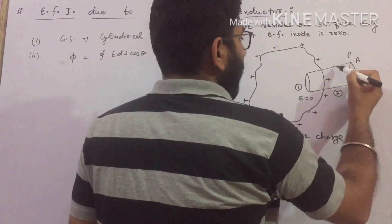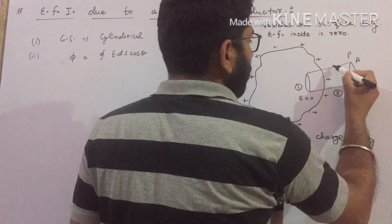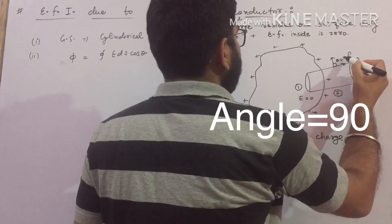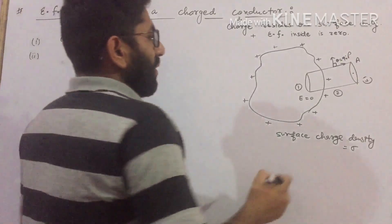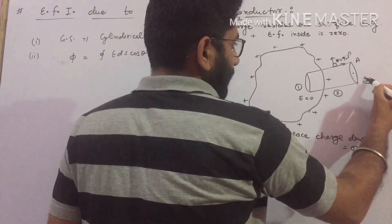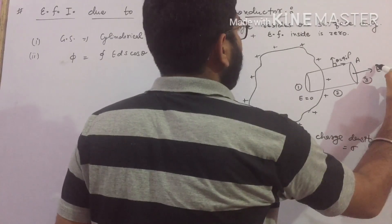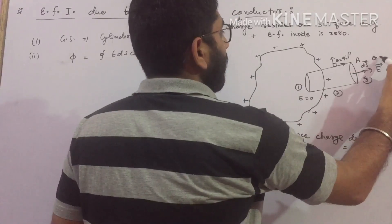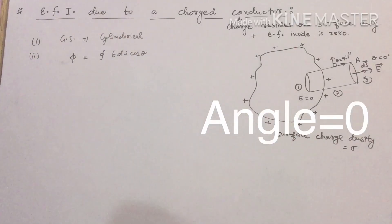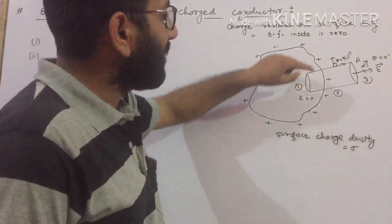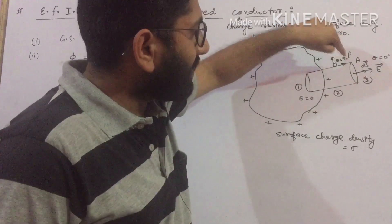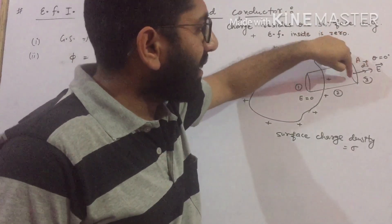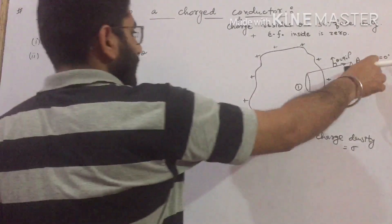For surface two, the electric field is directed away from the charged conductor while the area vector is normally outward, so theta is 90 degrees. For surface three, the electric field is away from the charged conductor and the area vector is also normally outward, meaning they are in the same direction, so theta is zero degrees.